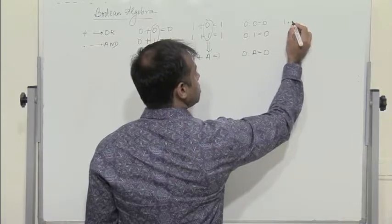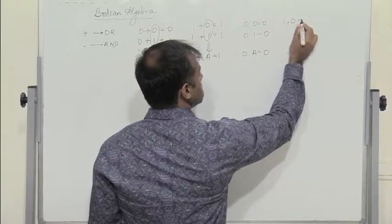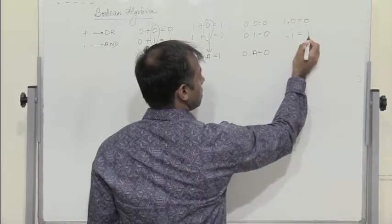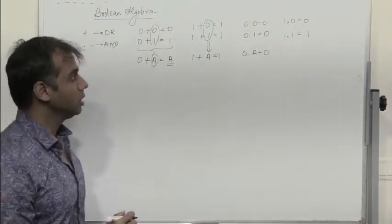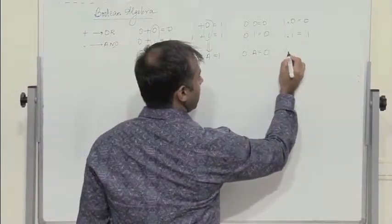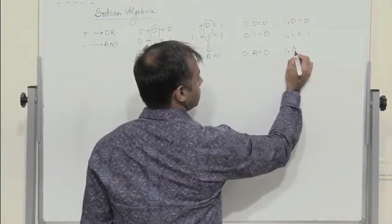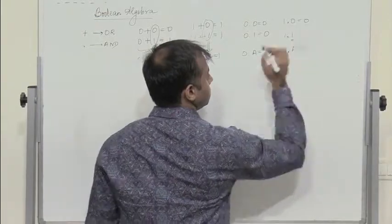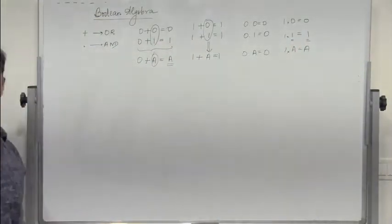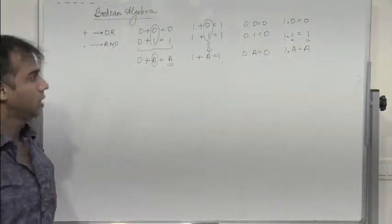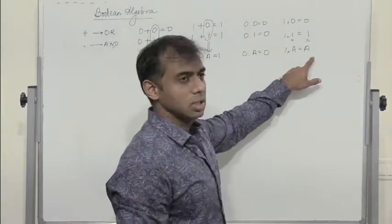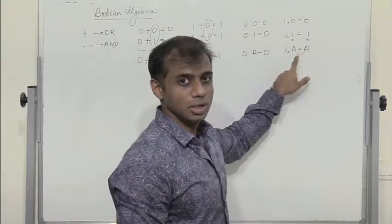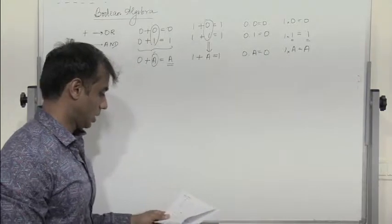Next, 1 into 0 is 0. 1 into 1 is 1. So now, 1 into A is A itself. When you multiply A with 1, your output is A. If A is 0, the output is 0. If A is 1, output is 1.